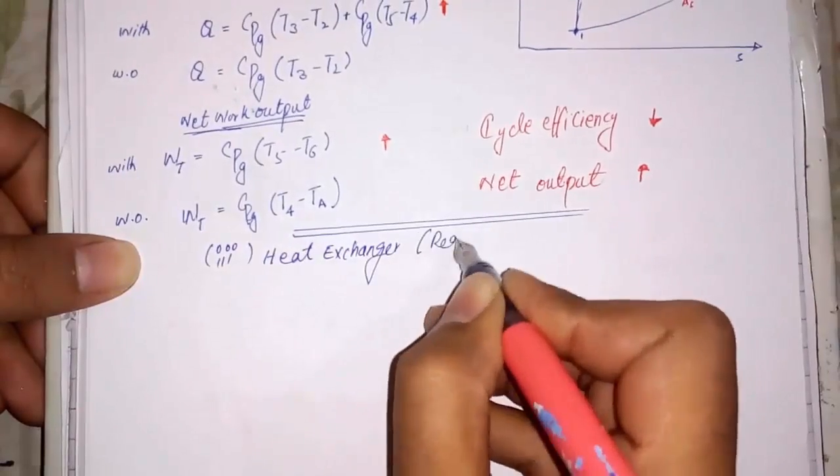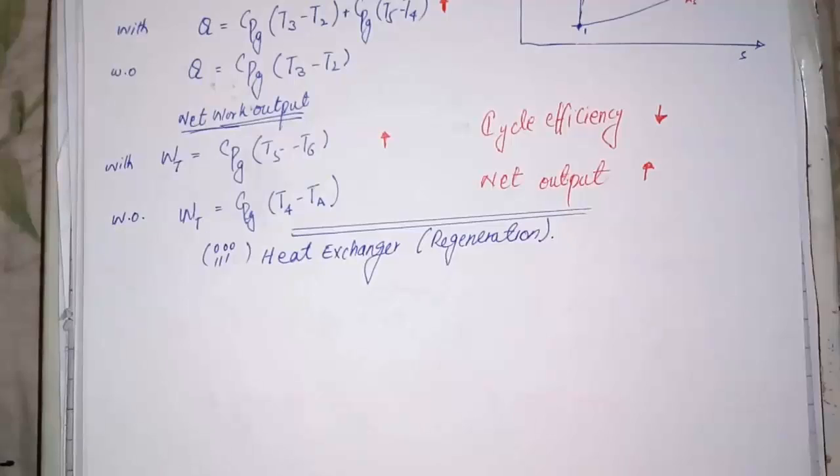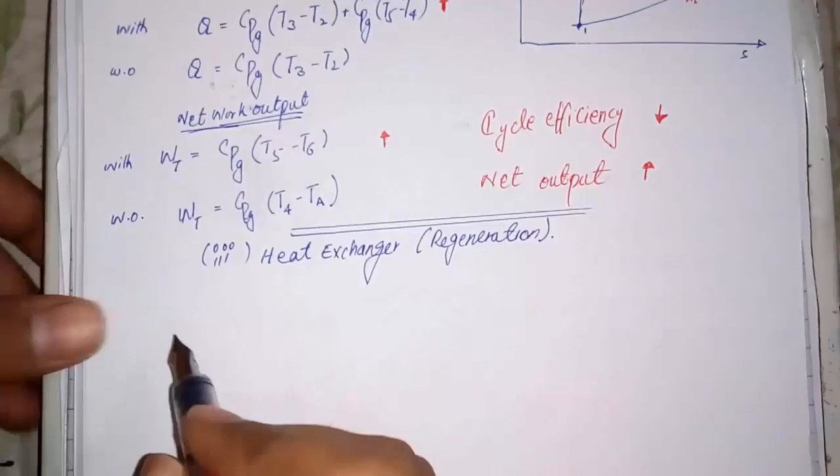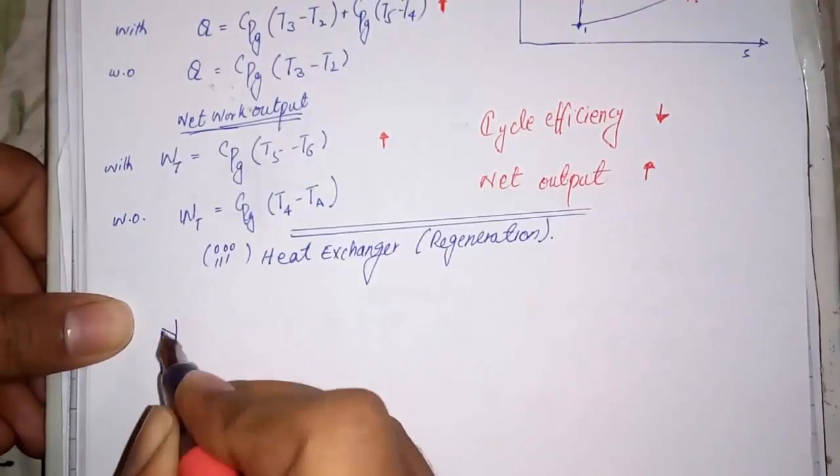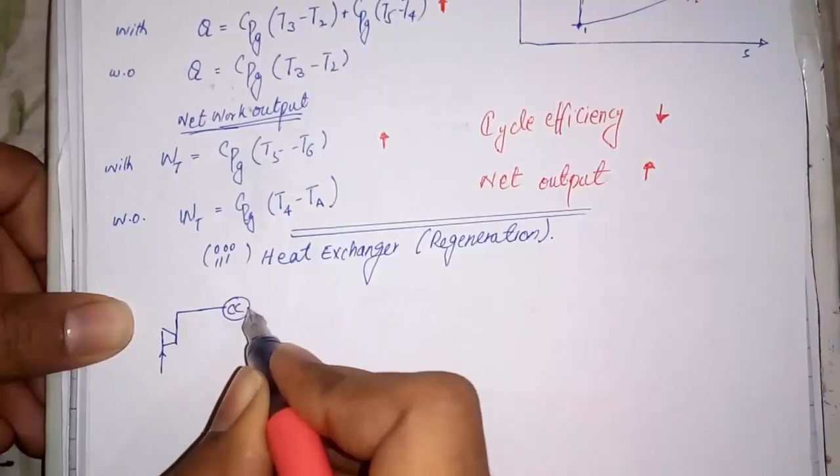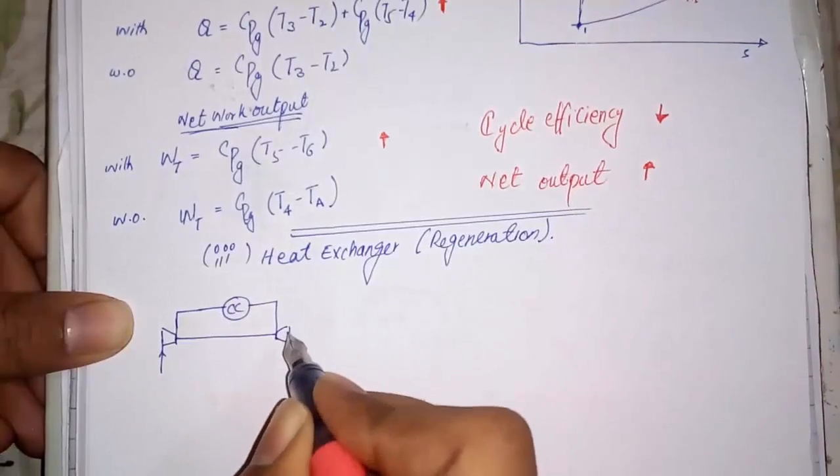Now the third method: heat exchanger, also known as regeneration. In this method, the exhausted gases are used to heat up the air before it enters the combustion chamber.